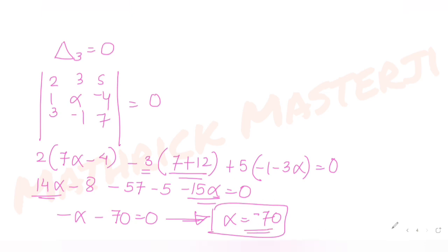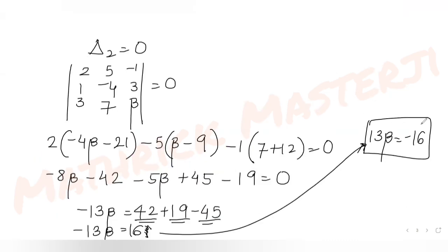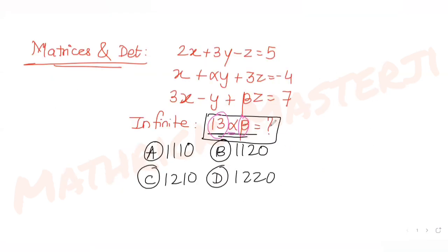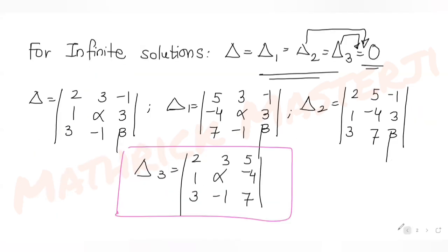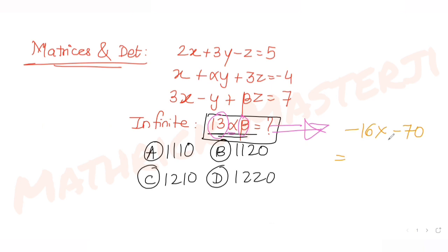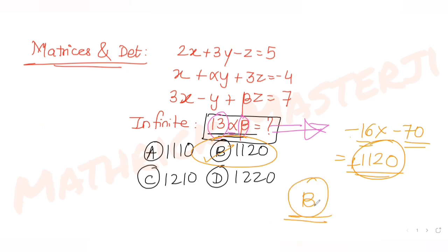So α = -70 and 13β = -16. Therefore 13αβ = 13β × α = (-16) × (-70) = 1120. Looking at the answer choices, this matches option B. So option B is the correct answer.